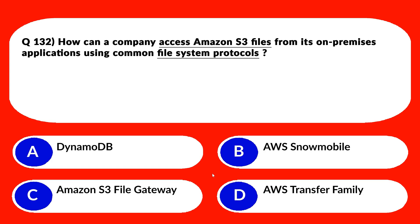This question will test your concepts on S3. Let's look at option A. A says DynamoDB. DynamoDB is a NoSQL database — it cannot support file system protocols as required by the question. So A is out. Let's move to option B. B says AWS Snowmobile. Snowmobile is used when we need to transfer petabytes of data from on-premises to AWS cloud. In the question there is no mention of the size of the data — it could even be a few megabytes — therefore we don't need Snowmobile.